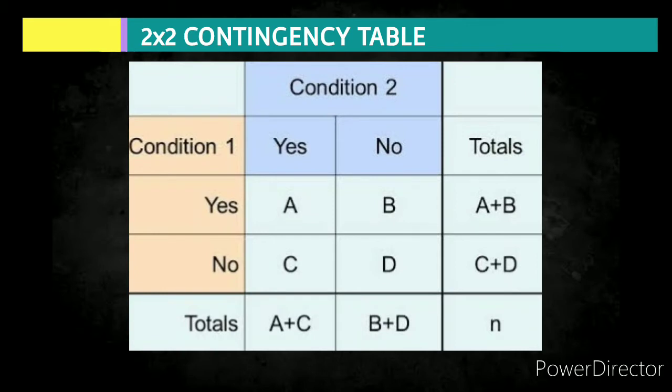So, this is the format of 2x2 contingency table. It has two conditions with yes or no in columns and rows - one yes for column and one yes for row, and same for no. In the first row, we have cells A and B. Second row, we have cells C and D. First column, we have cells A and C. Second column, we have cells B and D. And every ends or edges of the columns and rows are the totals, and N is the sample or number of samples.